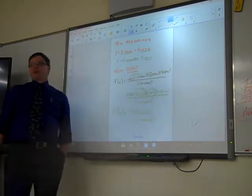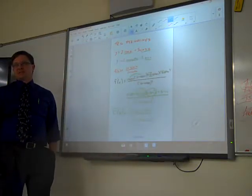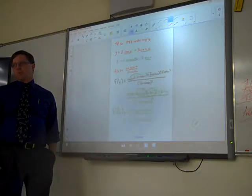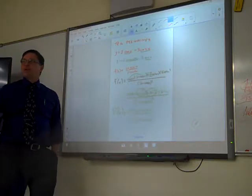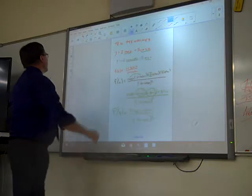There's only one trig identity in our class we've got to know. It's sine squared plus cosine squared is 1. And if you know that, you can derive the rest.